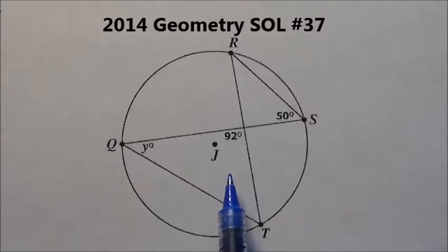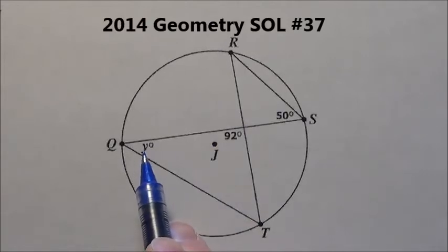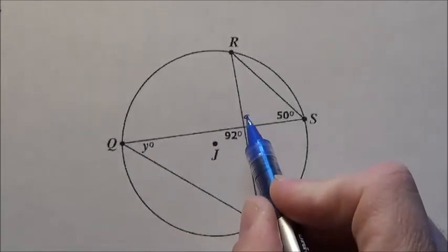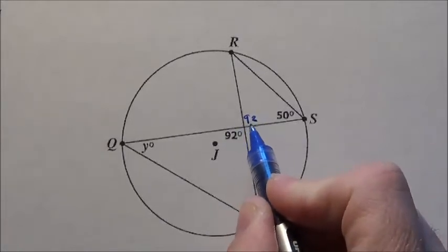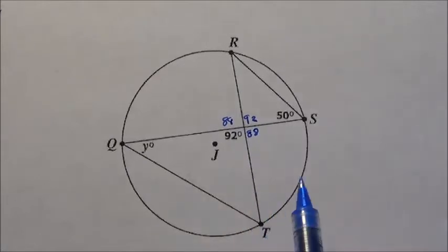In problem 37, we have a circle J and need to find the value of Y. We have 92 right here, so we know the other side is 92. Then it has to add to 180, so we have 88 and 88, but that doesn't really help us a lot.